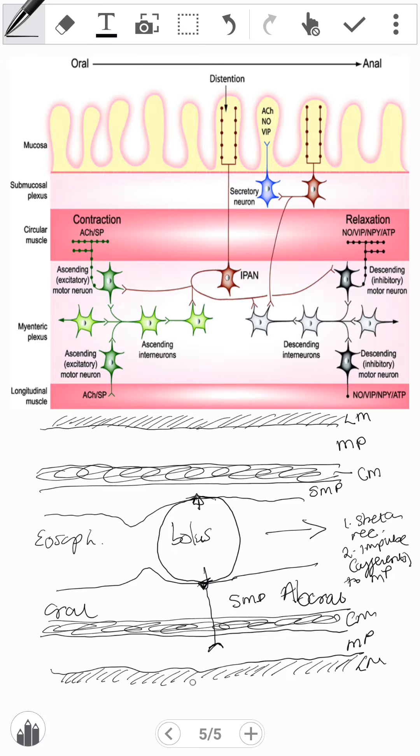Now in the myenteric plexus, we have interneurons within the plexus. Now these, we have two types. We have the excitatory type and we have the inhibitory type.